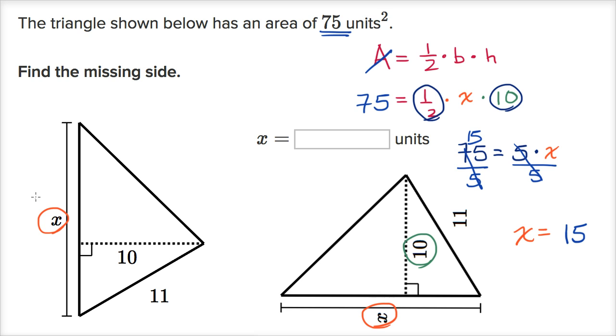And you can verify that. If x is equal to 15, base times height times 1/2. Well, that's 15 times 10 times 1/2, or 15 times 5, which is going to be 75 square units.